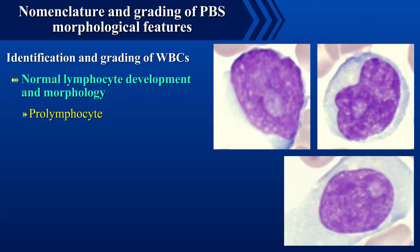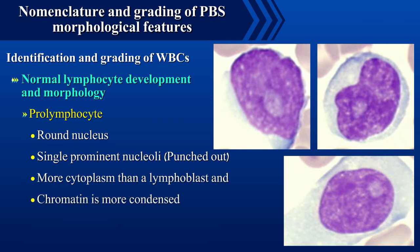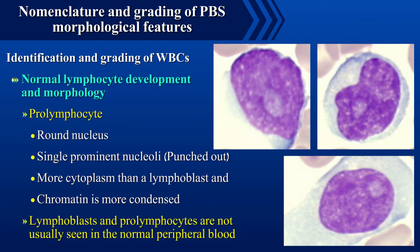Pro-lymphocyte has a round nucleus and a single prominent nucleolus. It has more cytoplasm than a lymphoblast and the chromatin is more condensed. Lymphoblasts and pro-lymphocytes are not usually seen in the normal peripheral blood.